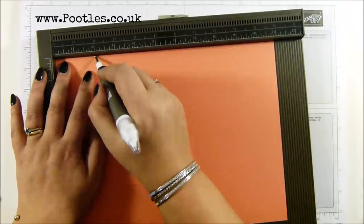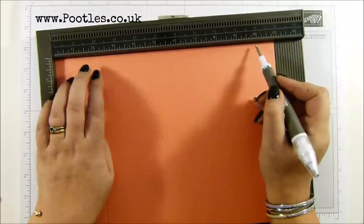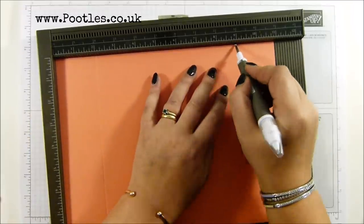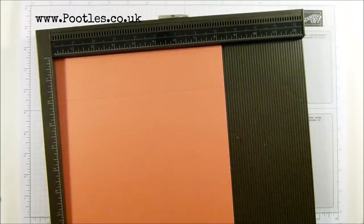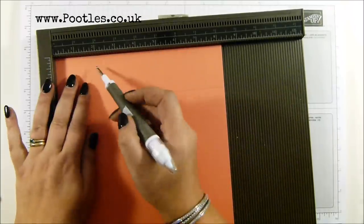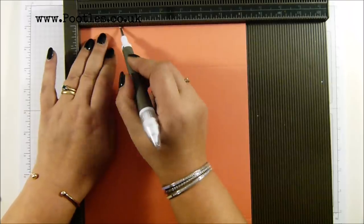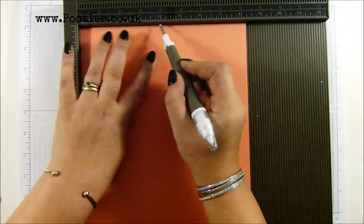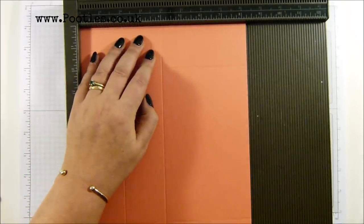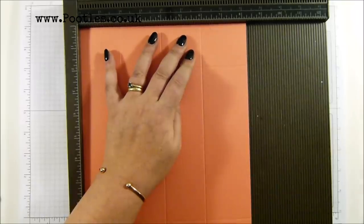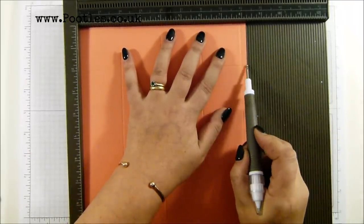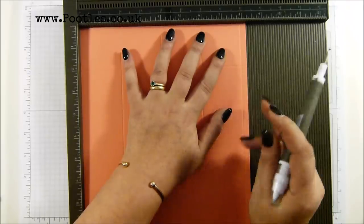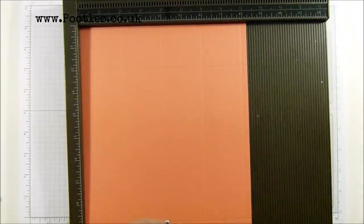So on the long side, score it at two inches and nine inches. So that is five and 22 and a half centimeters. Then turn it round and on the short side, fully score it at two, four, six and eight inches. And this is why I say if you're in North America, you can leave yours at eight and a quarter. You're going to have more space to put your tape or adhesive down.